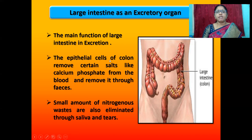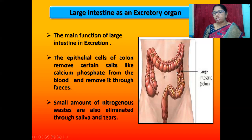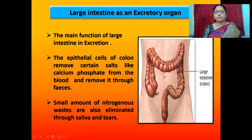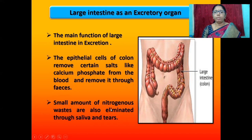The next accessory excretory organ is the large intestine. The epithelial cells of the colon remove certain salts like calcium phosphate from the blood and eliminate them through feces. Small amounts of nitrogenous wastes are also eliminated through saliva and tears.